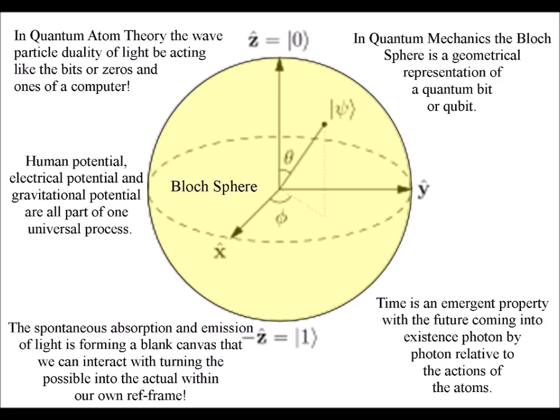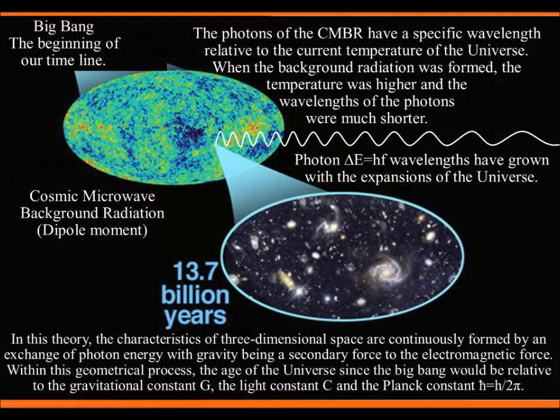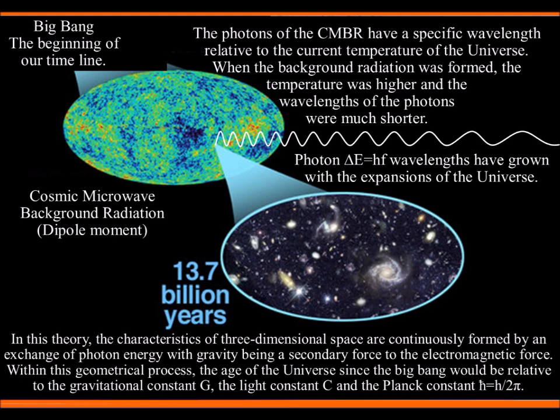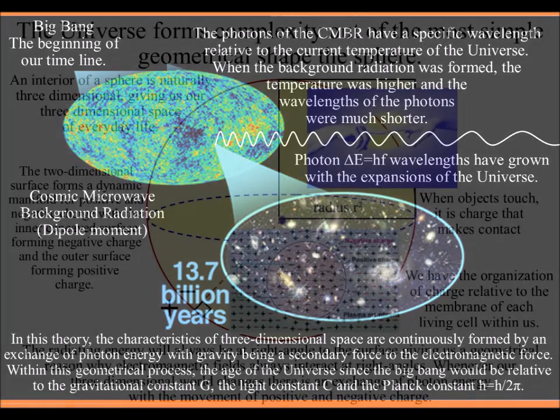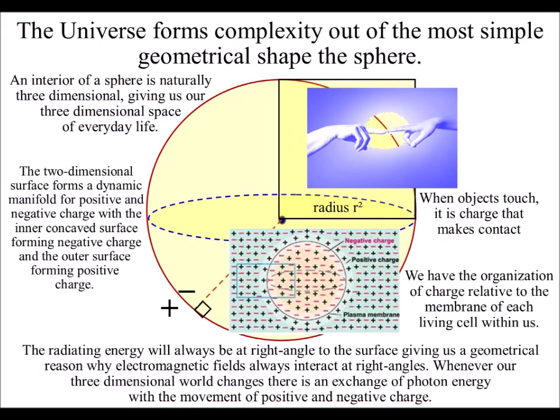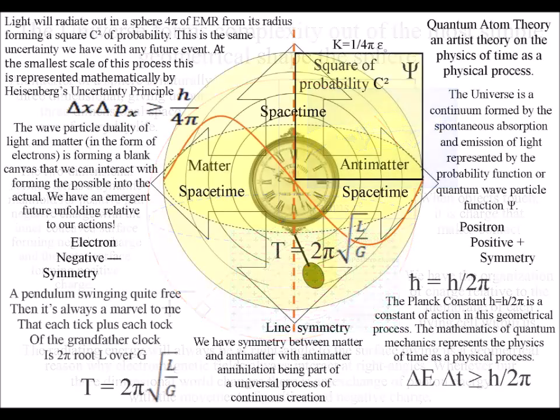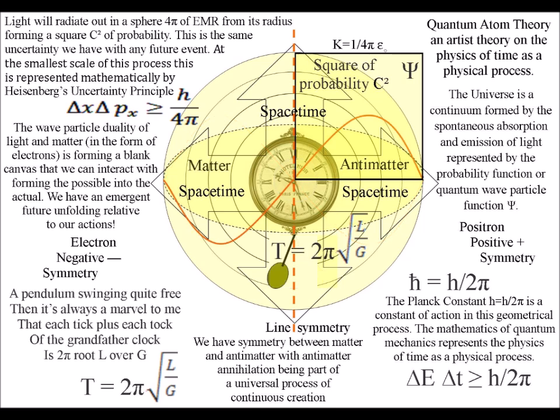This can be seen with the expansion of the universe directly linked to the increasing wavelength of photon energy. We have one universal process from the quantum world of the very small to cosmology at the largest scale, with complexity arising out of simplicity in between the two as a process of spherical symmetry forming and breaking.